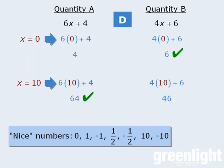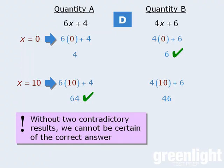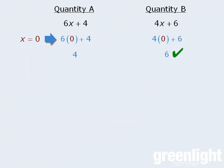Now, it's important to note that the main drawback of the plug-in numbers approach is that unless we get two contradictory results, as we did here, then we can never be absolutely certain of the correct answer. Here's what I mean. Let's say that we didn't plug in 10 for x. Instead, let's say that we plugged in ½. If x equals ½, then the two quantities evaluate to be 7 and 8, in which case quantity b is still greater than quantity a.